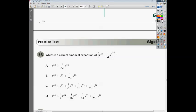This is the Algebra 2 End-of-Course Practice Test, or Tennessee End-of-Course Practice Test, question number 53. It's kind of a longer one. Question 53 says, which is the correct binomial expansion of the quantity x to the 20th plus 1/4th x to the 5th, and that's raised to the 4th power.